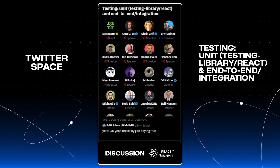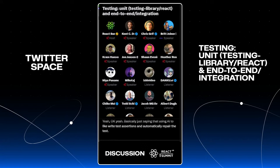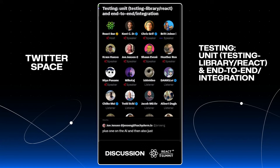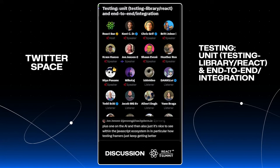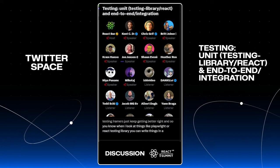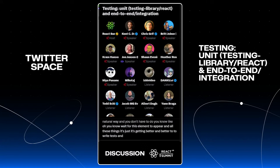Using AI to write test assertions and automatically repair the tests — plus one on AI. It's also nice to see within the JavaScript ecosystem how testing frameworks just keep getting better. When I look at things like Playwright or React Testing Library, you can write things in a very natural way — you don't have to manually wait for this element to appear and all these things. It's just getting better and better to write tests in a way that's not going to be flaky. As someone who authors tests from time to time, that's really nice.